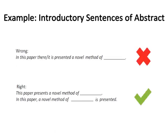Example of introductory sentences of abstract: the first phrase is wrong — 'In this paper there/it is presented a novel method of interview.' The correct forms are: 'This paper presents a novel method of interview,' or 'In this paper, a novel method of interview is presented.' So you can write the introductory phrase of an abstract in the right way.